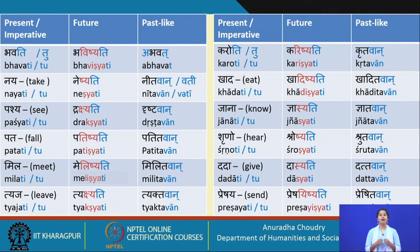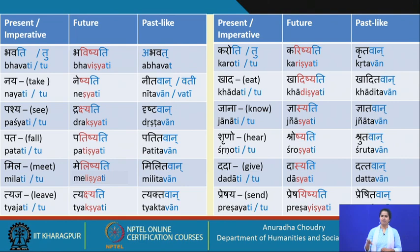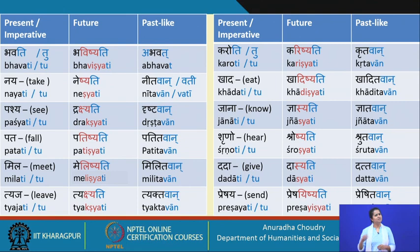Milati means 'to meet' and is a transitive verb that takes an object. Kam milati? Mitram milati — you meet your friend. Janakam milati — meet your father. Aham sahodareem milami — I meet my sister. Aham mama sahodareem milami — I meet my sister. Tiajati means 'to leave' and also takes the accusative: durabhyasaha meaning bad habit, kim tiajati? Durabhyasam tiajati — leave the bad habit.